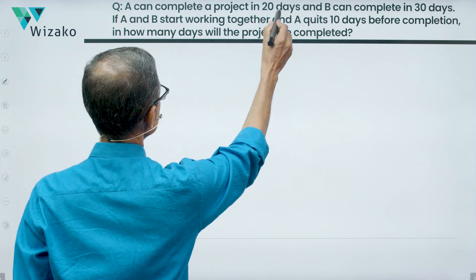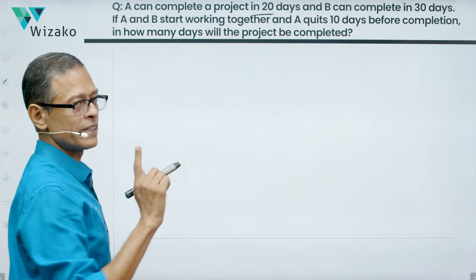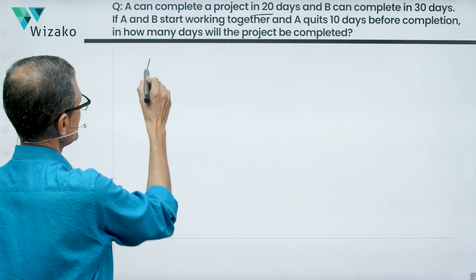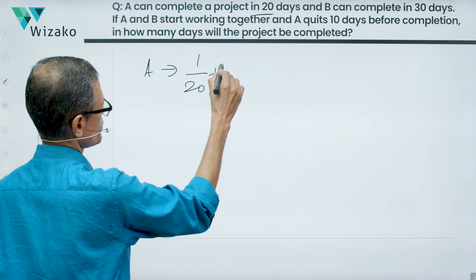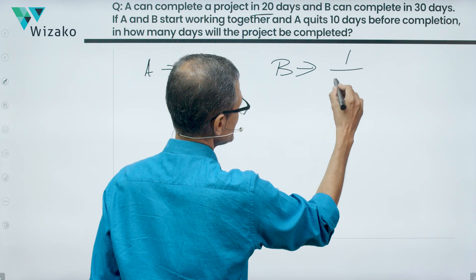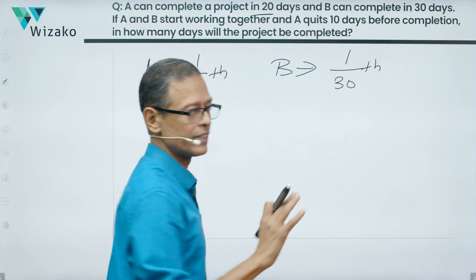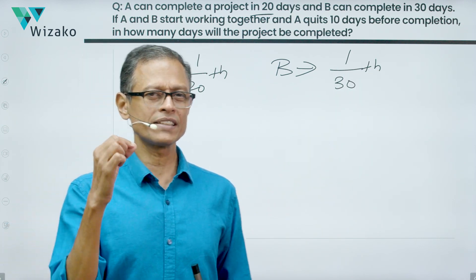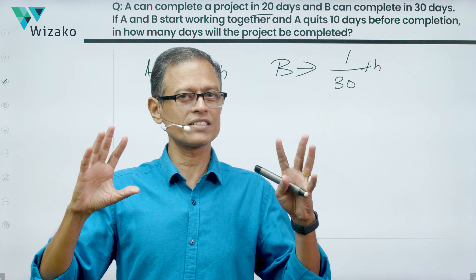We'll interpret things that are very easy to make sense of. A completes the project in 20 days, so in a day A will complete 1/20th of the project. B completes the entire project in 30 days, so in a day B will complete 1/30th of the project. This is normally the stuff that we'll do. Let's finish whatever is in familiar territory.